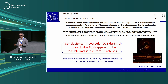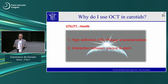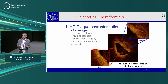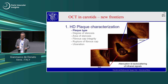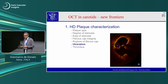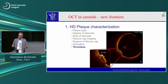Back in 2012, we were able to set a protocol to use OCT in carotids with a non-occlusive flushing technique. This allowed us to gain a lot of information: plaque characterization, calcium distribution, back-scattering of infrared signals, degree of stenosis, areas of stenosis, ulceration, surface morphology, and presence of thrombus.